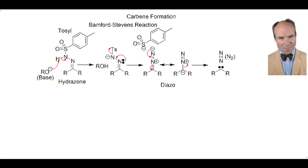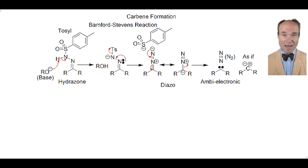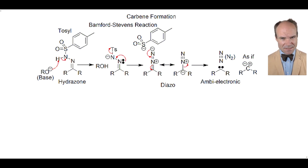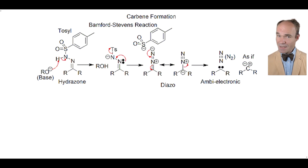The carbene can be viewed as ambi-electronic — that is, having the properties of both a carbanion and a carbocation. In the singlet form, the lone pair in the sp2 orbitals can act as a carbanion, yet the empty p-orbital behaves as a carbocation.